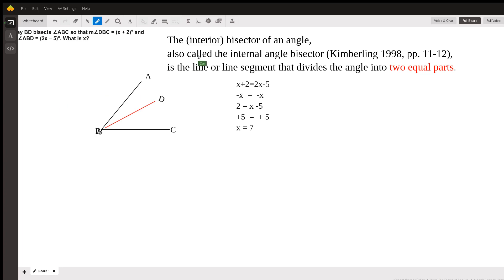Now the definition of a bisector angle, I've included it here, is also called the internal angle bisector. It is the line or line segment that divides the angle into two equal parts.